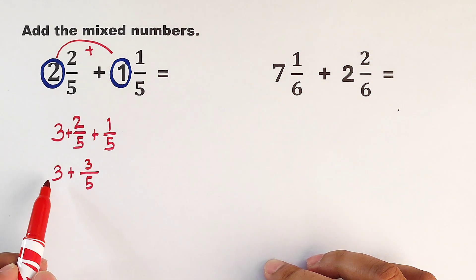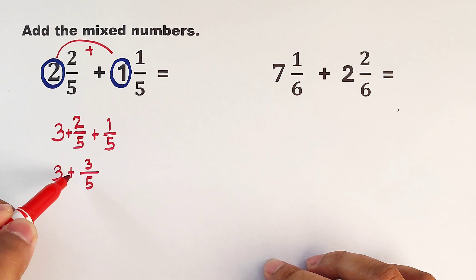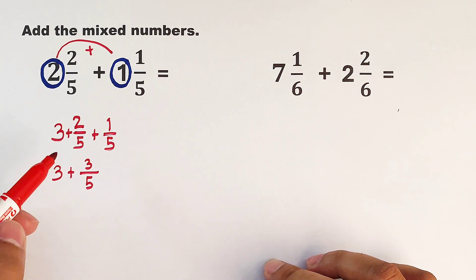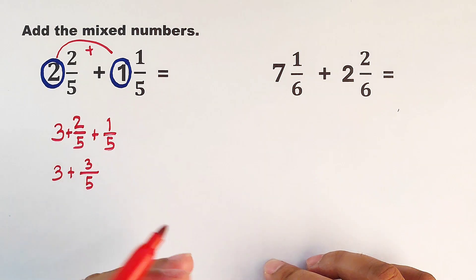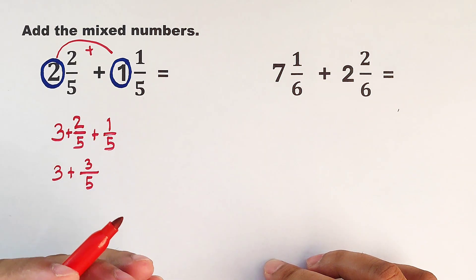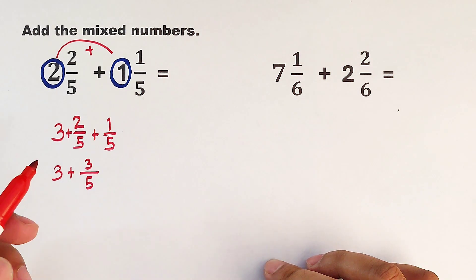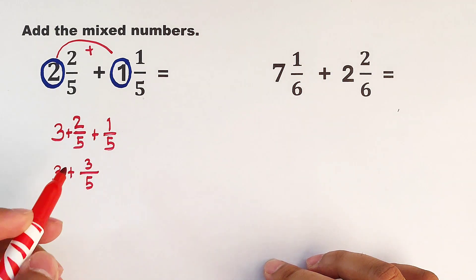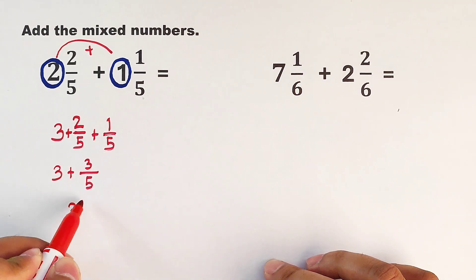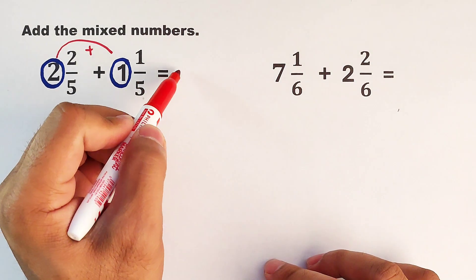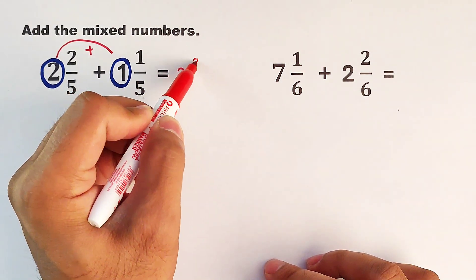And as you can see, what we have now is 3 plus 3 over 5. Actually, the plus symbol is not necessary in this part, but I'm just giving you the idea that we're doing addition. So we have 3 plus 3 over 5. That would be 3 and 3 over 5. This is now the final answer for this problem.